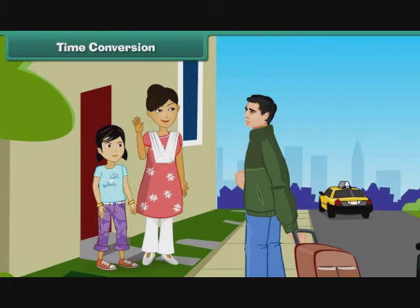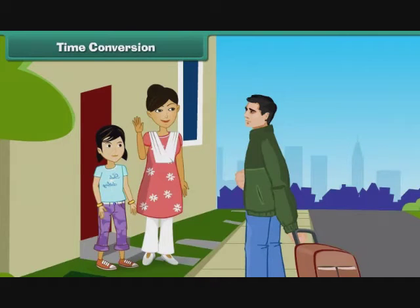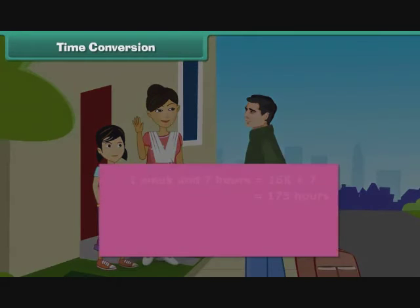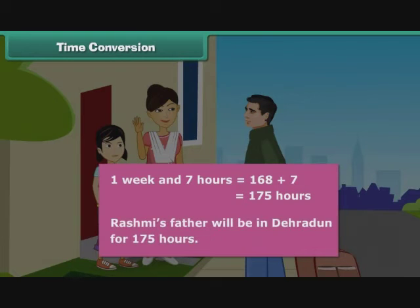Rashmi's father has left for Dehradun. He will be there for a week and 7 hours. Express his stay in Dehradun in hours. 1 week is equal to 7 days. 1 day is equal to 24 hours, so 7 days is equal to 24 multiplied by 7, which equals 168 hours. 1 week and 7 hours is equal to 168 plus 7, which equals 175 hours. Rashmi's father will be in Dehradun for 175 hours.